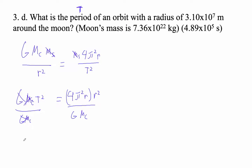Okay, so this goes away, right? And now we've got T squared is equal to 4 pi squared, and then r times r squared is r to the 3rd over G M_c.